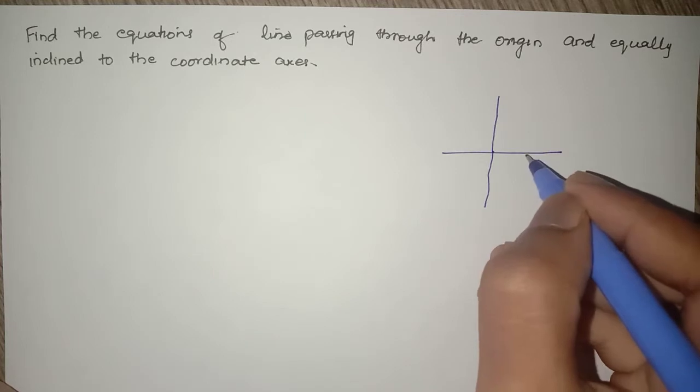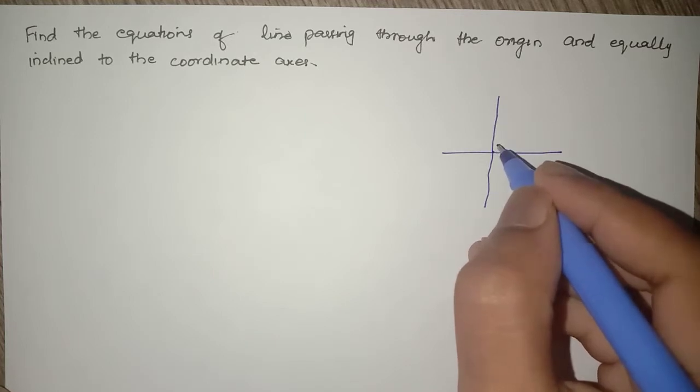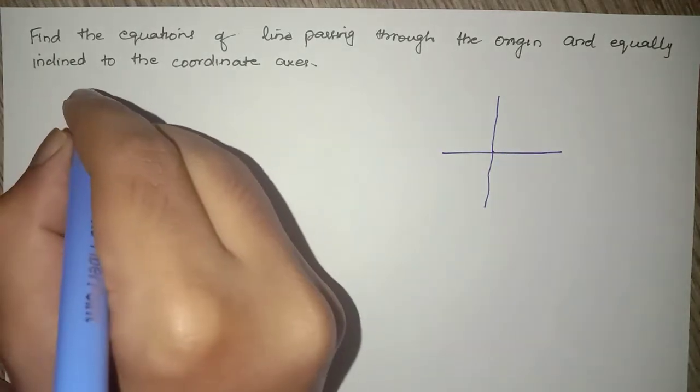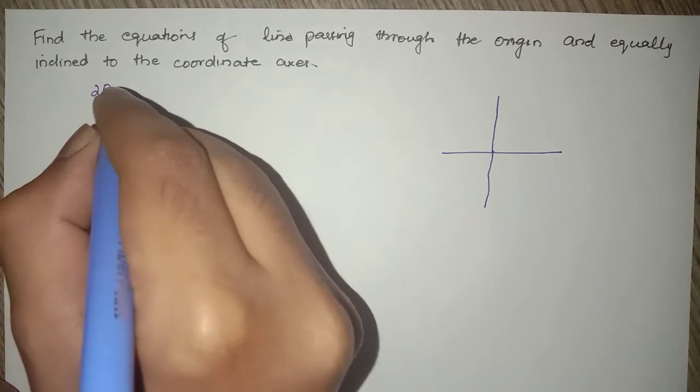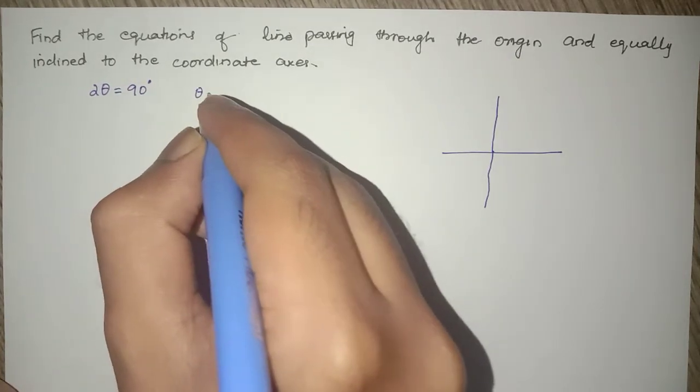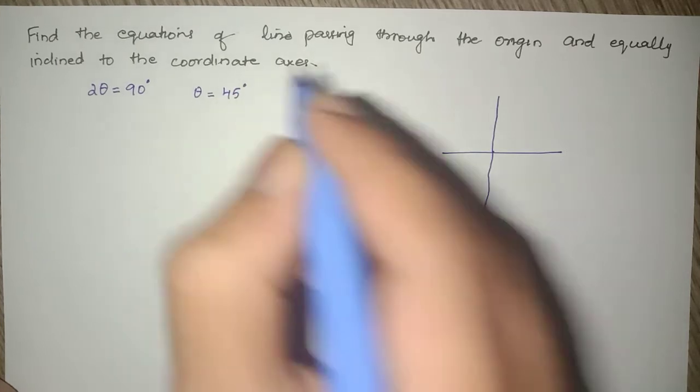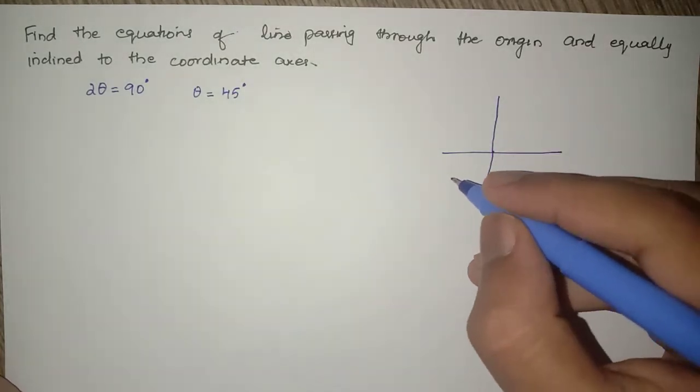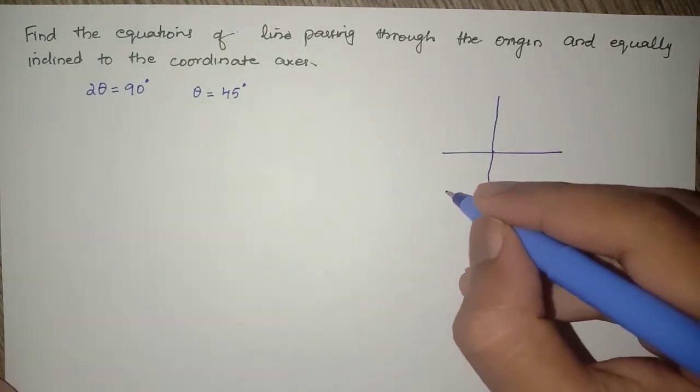Equally inclined to the coordinate axes means 2θ = 90°, or θ = 45°. That means our line will pass like this.